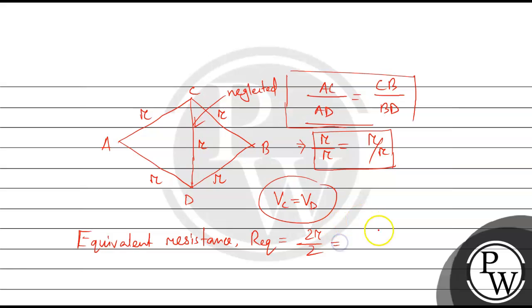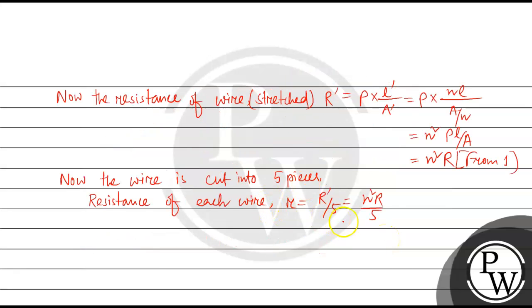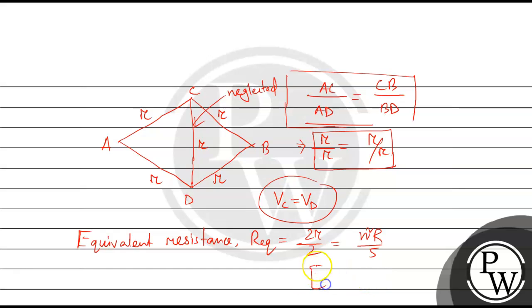So it is N square R by 5, because small r is N square R by 5. So R_Eq equal to N square R by 5. So the final answer is this.